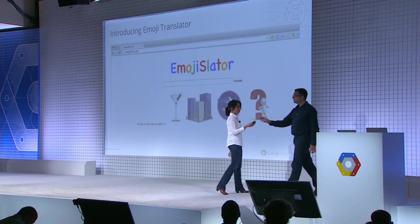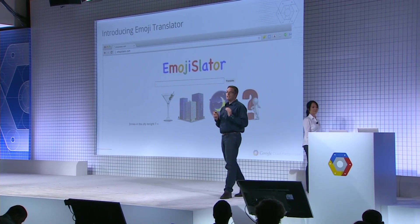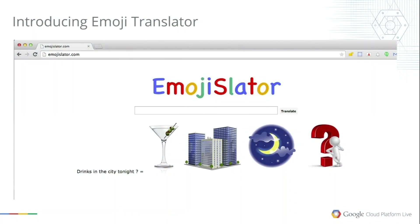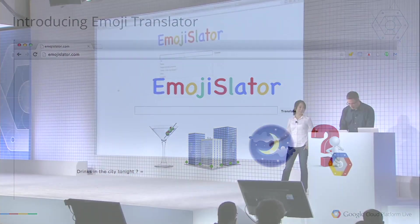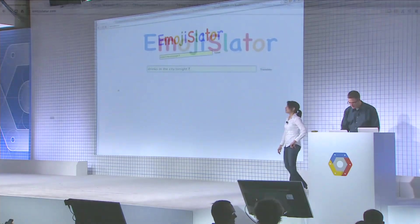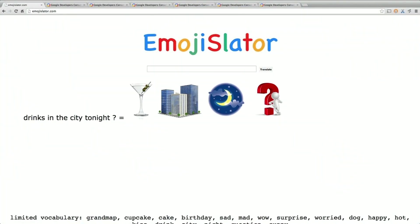Today we're going to talk about three tools: Cloud Logs, Cloud Trace, and Cloud Debugger. To demonstrate them, we're going to launch the Emoji Translator — Emoji Slator — which takes your boring text and turns it into vibrant, exciting images. We think this is going to sweep the Internet after this conference. Let's switch over to the demo machine. We just enter that boring text and we get these vibrant images.